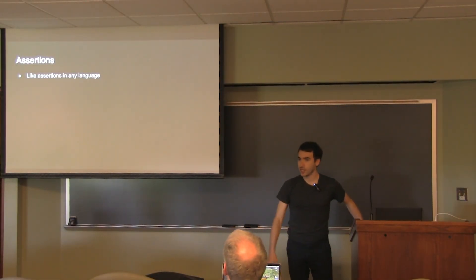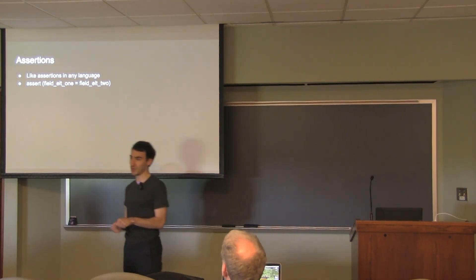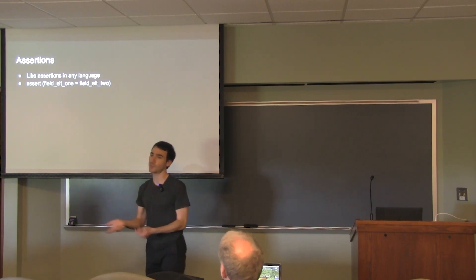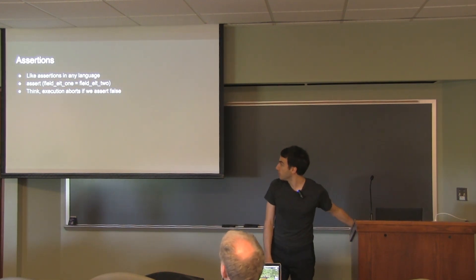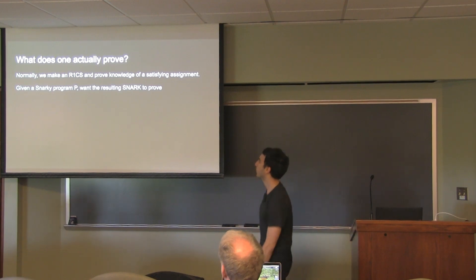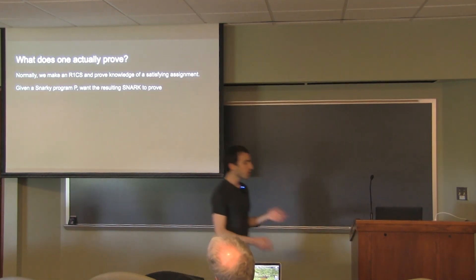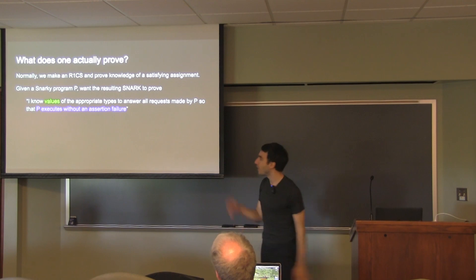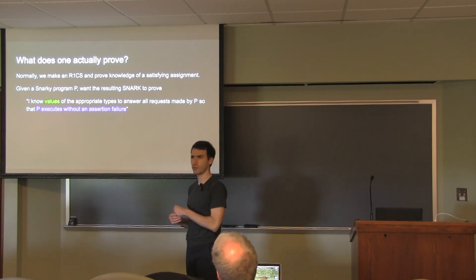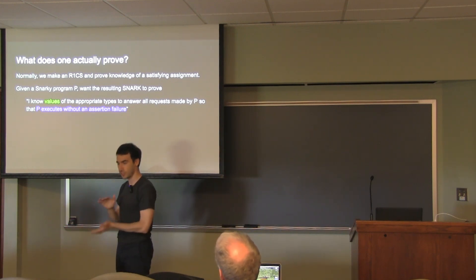There are assertions. It's like assertions in any language, but the language of what kind of constraints you can assert — they're exactly rank-one constraints. So you can assert this number equals this number at the base. Execution aborts when you assert false. What you actually prove with Snarky is: I know values of the appropriate types to answer all the requests made by program P, such that P can execute without an assertion failure.